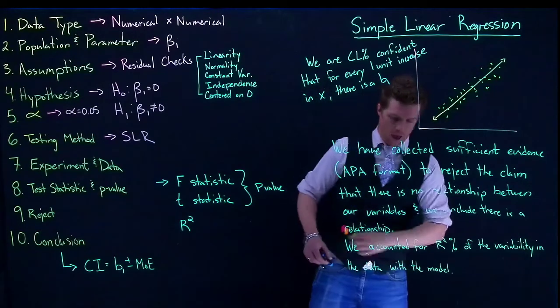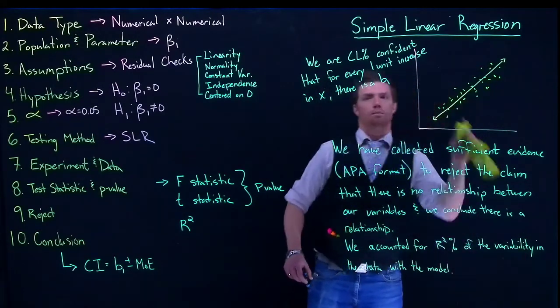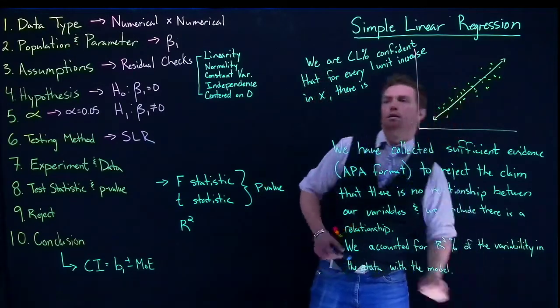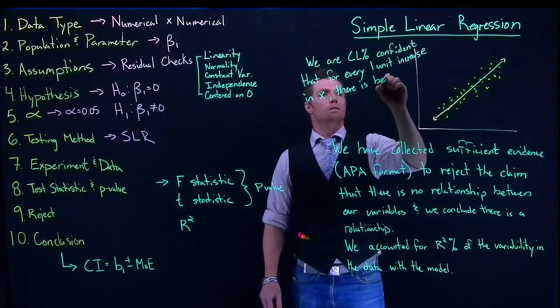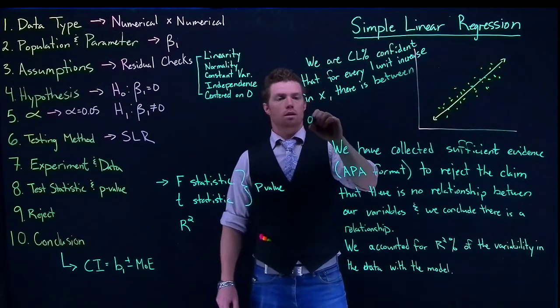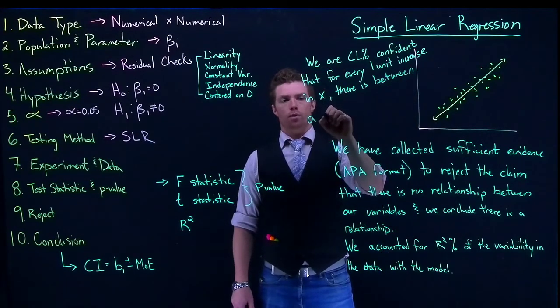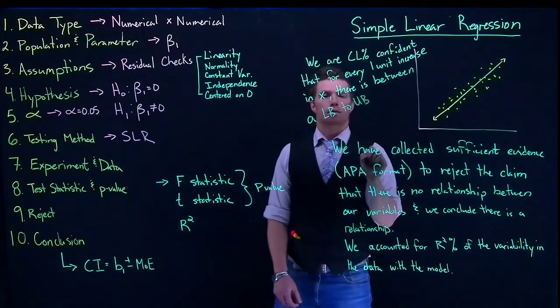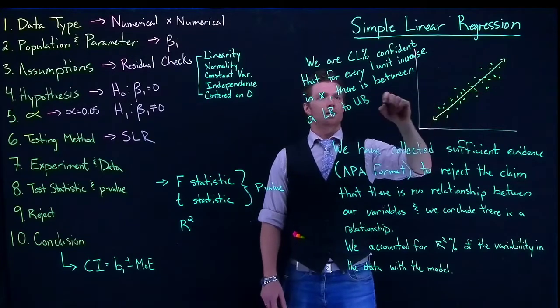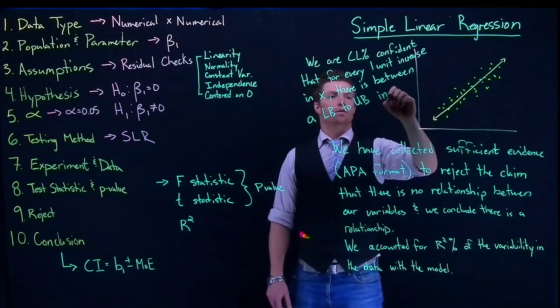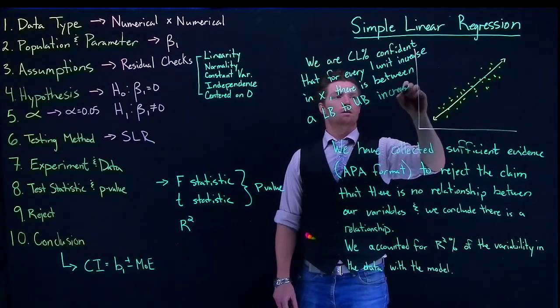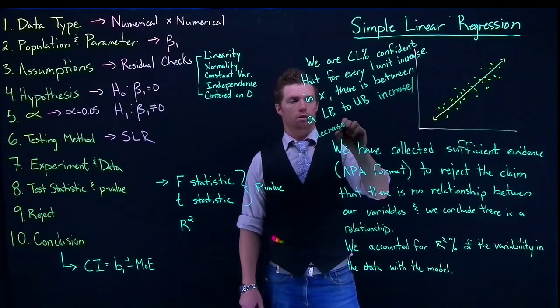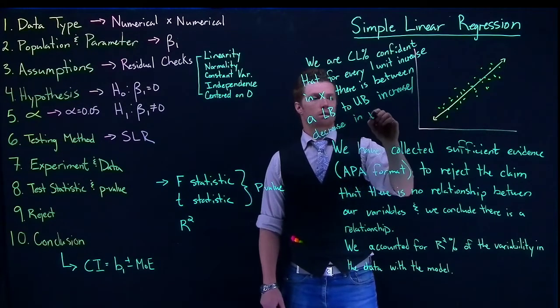There's a couple ways that we can actually get it written out. But let's say we'll do between lower bound to upper bound. In this case, we'll have an increase or decrease in Y.